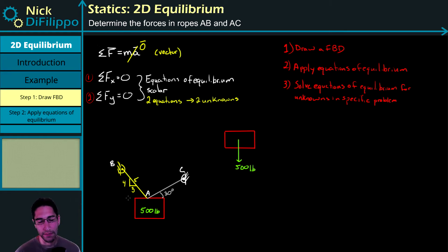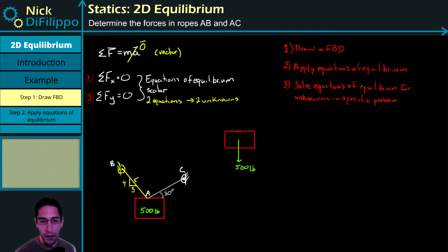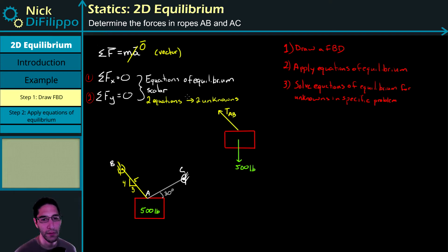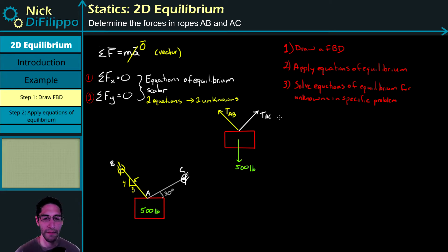The other forces acting on this block are the two rope forces. If we cut each rope, we get a tension force in rope AB and a tension force in rope AC — tension always points away from our object. So we have tension TAB, tension TAC, and the 500-pound weight. That is our free body diagram: two rope forces and one weight force.